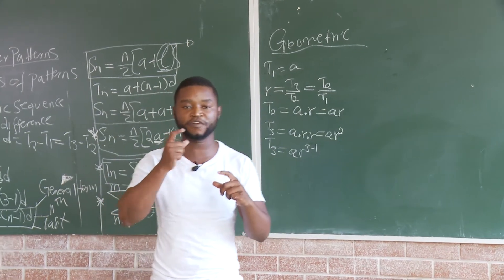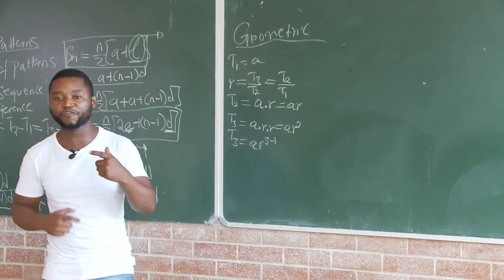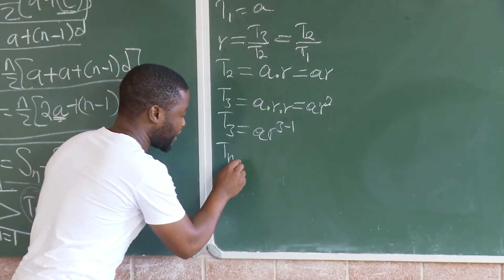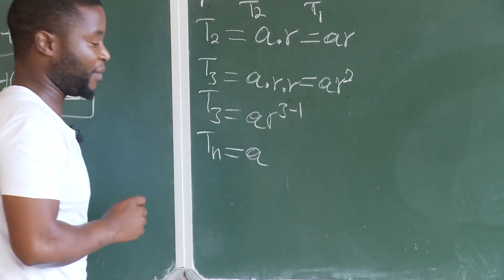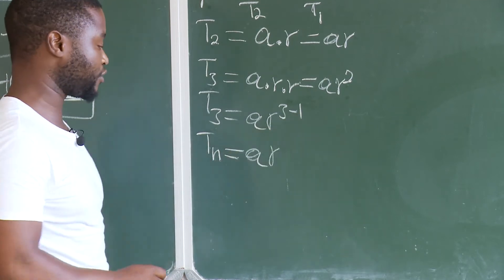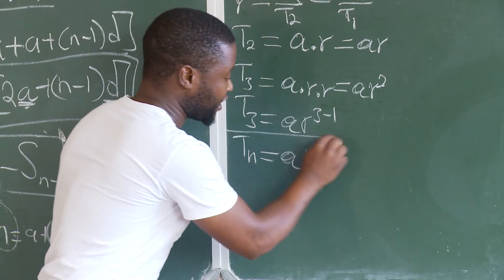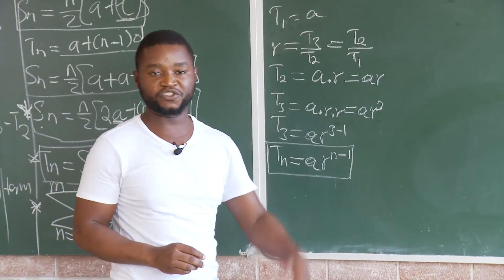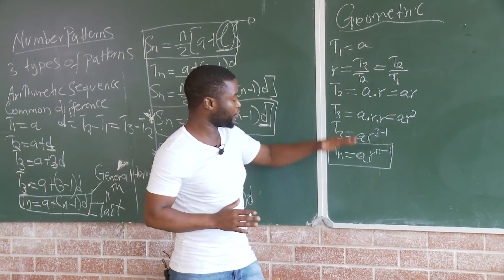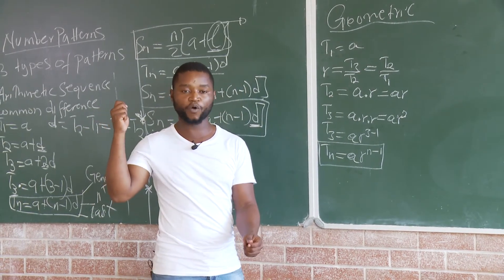That means we can generalize this. The general term of the geometric sequence gives us TN equal to A multiplied by R to the power N minus 1, because we subtract 1. That is how we end up with the geometric sequence general term. So if you want to find any term sitting in any position, you can use this formula to find any term.